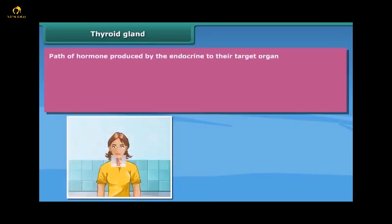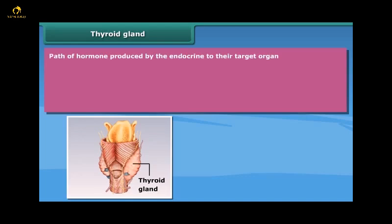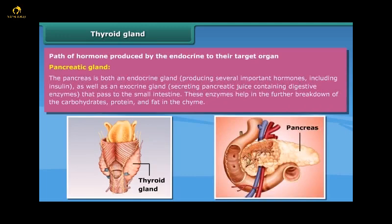Thyroid gland: path of hormone produced by the endocrine gland to their target organ. Pancreatic gland: the pancreas is both an endocrine gland producing several important hormones including insulin, as well as an exocrine gland secreting pancreatic juice containing digestive enzymes that pass to the small intestine. These enzymes help in the further breakdown of carbohydrates, protein and fat in the chyme.